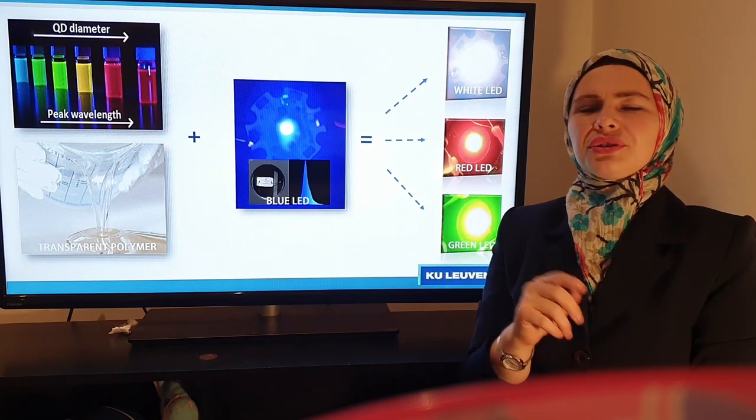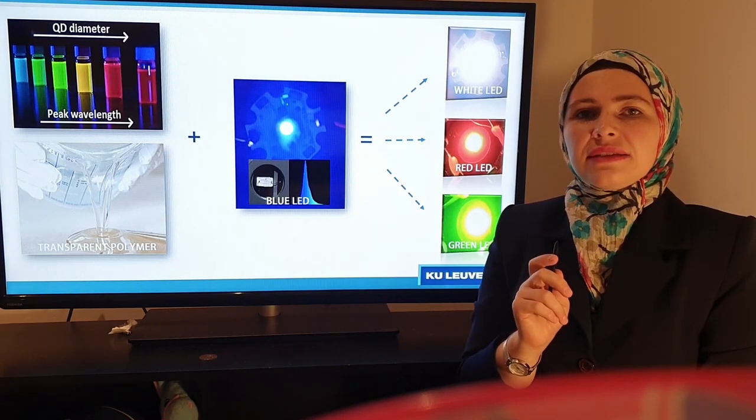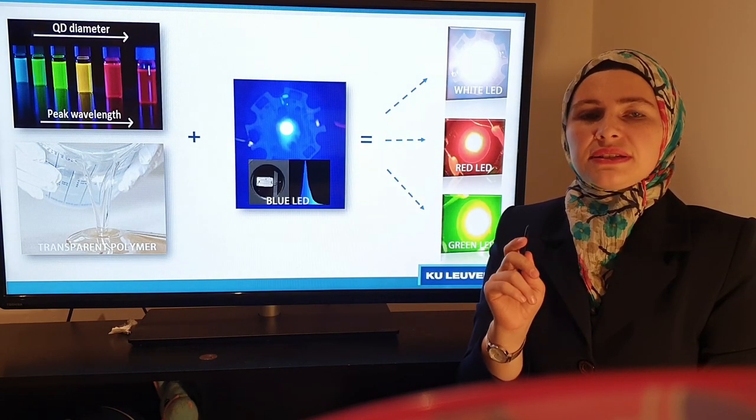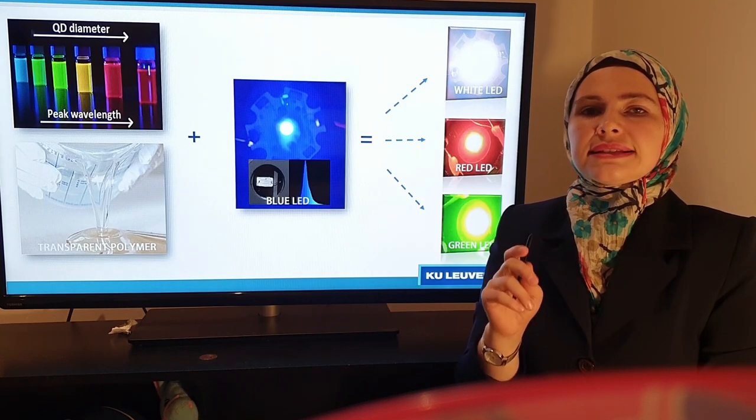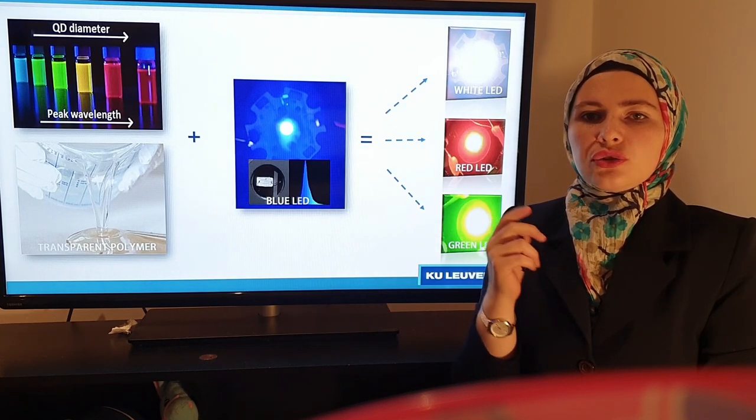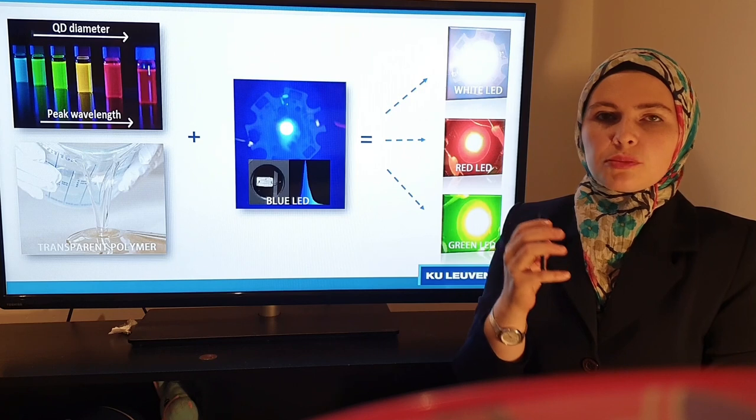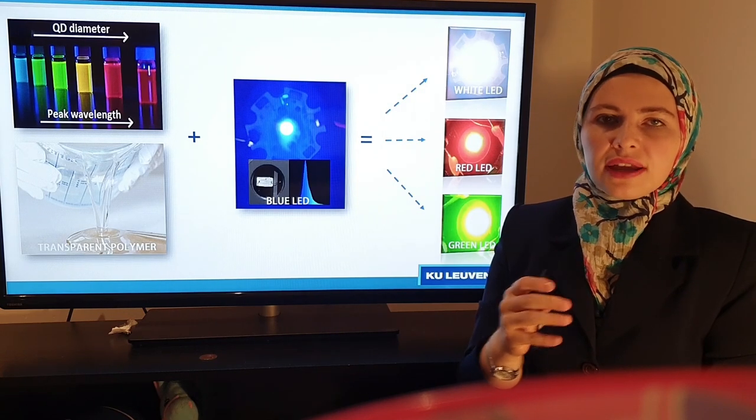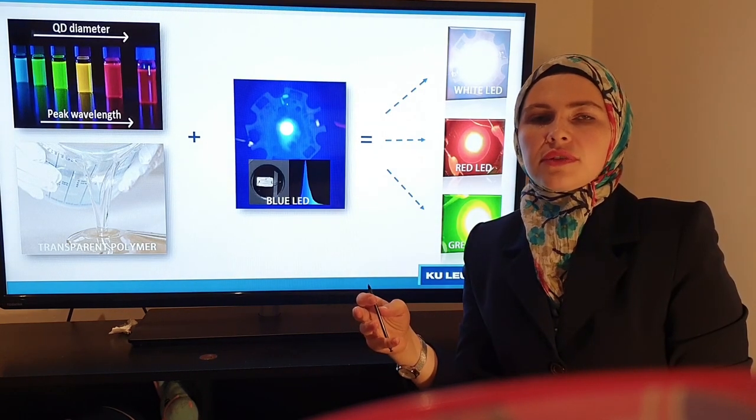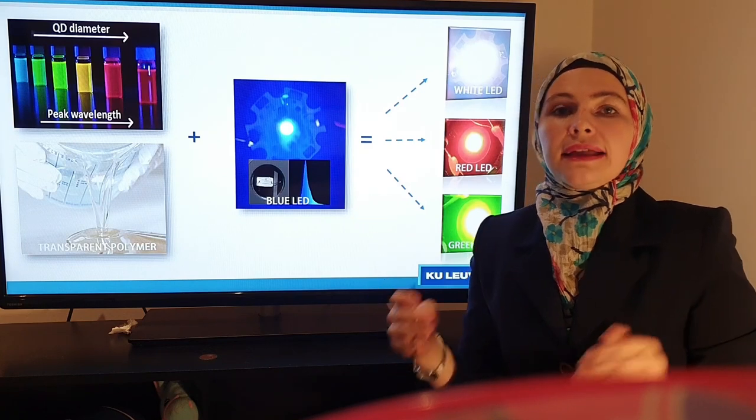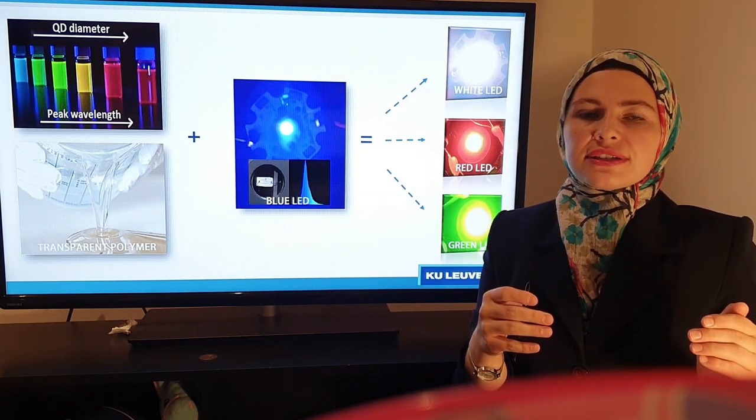But what are quantum dots? Quantum dots are tiny particles of less than 10 nanometers in diameter, and this is 10,000 times narrower than human hair. Quantum dots absorb a specific wavelength or color of light and then convert it to a longer wavelength or light color. And the color they emit depends on their size.